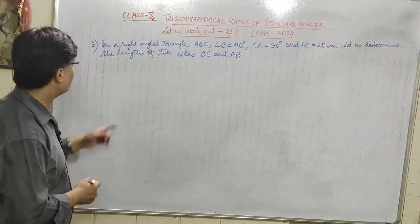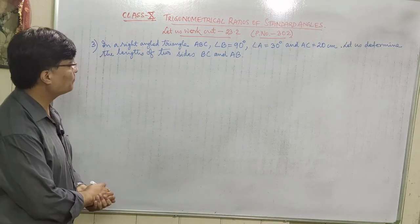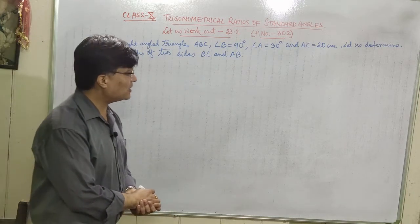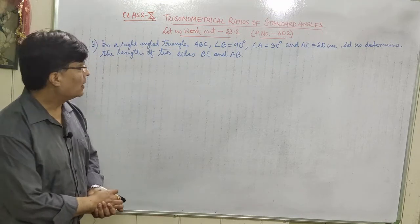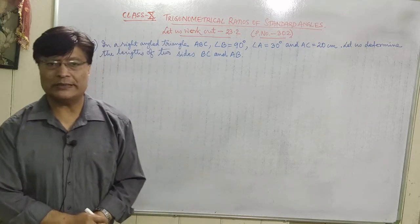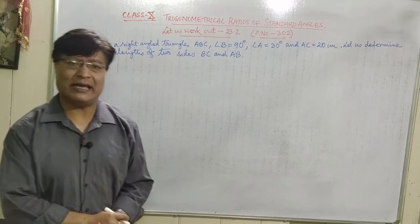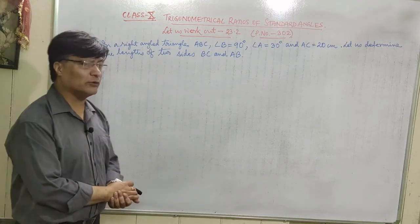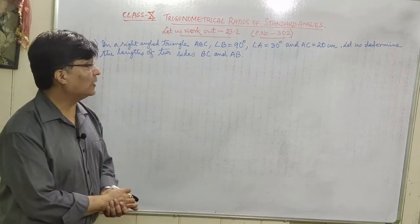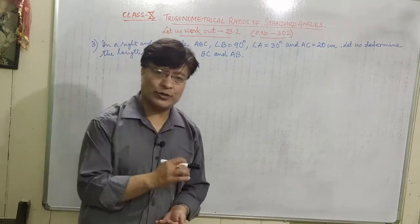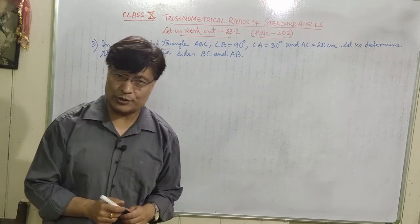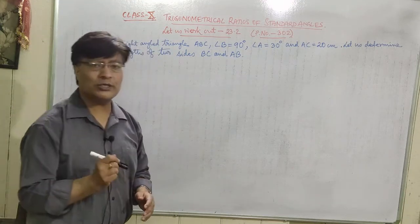Question number three: in a right angle triangle ABC, angle B is equal to 90 degrees, angle A is equal to 30 degrees, and AC is equal to 20 centimeters. We have to determine the lengths of the two sides BC and AB. In the question it is given that there is a right angle triangle ABC where angle B is 90 degrees, angle A is 30 degrees, and AC is 20 centimeters.